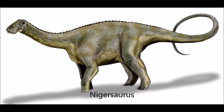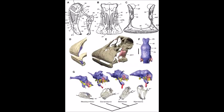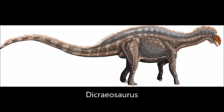The Rebbachisaurids are all known from the early to late Cretaceous and contain some really odd members like the broad-muzzled Nigersaurus. It had a dental battery that allows for high tooth replacement. Based on how the skull was positioned in relation to the neck, it likely browsed low on the ground. Next, Dicraeosauridae is unique in that all its members have short necks — well, at least for sauropods.